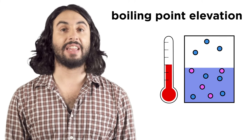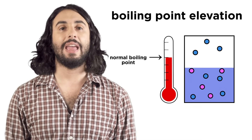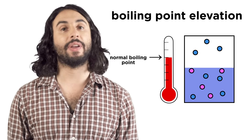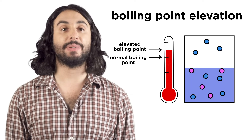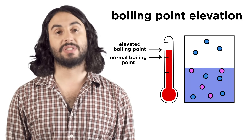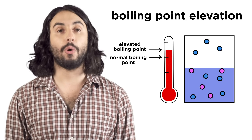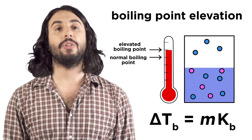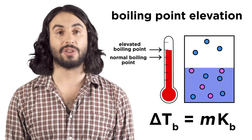A similar phenomenon is that of boiling point elevation. When a solution is raised to the temperature at which the solvent should boil, again there are solute particles blocking the solvent molecules from going into the gas phase. This means more heat energy will be needed to compensate, which results in an elevated boiling point. The more solute there is, the more dramatic the effect. So the change in boiling point is given by the molality of the solution times a constant that is specific to the solvent.